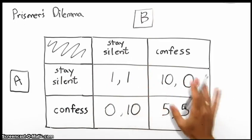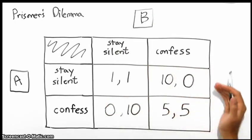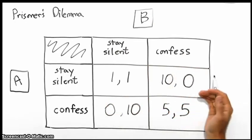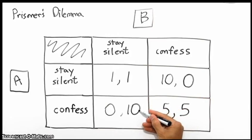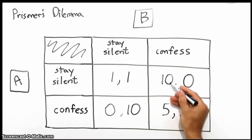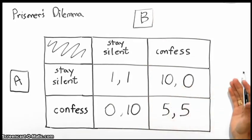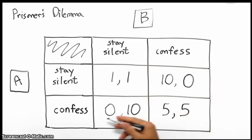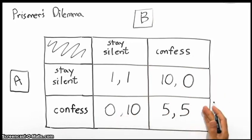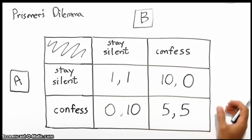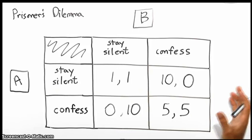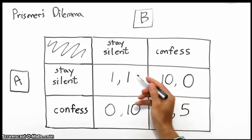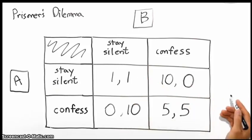But the pressure is on them to confess, of course, because if they confess and the other doesn't, they will go free, and their partner, Prisoner B or Prisoner A, will take the full 10-year penalty. If they both confess, they'll split the 10-year penalty. So the ideal situation for both prisoners as a partnership, the two of them together, is to stay silent. They'll only face a one-year penalty, a one-year sentence.